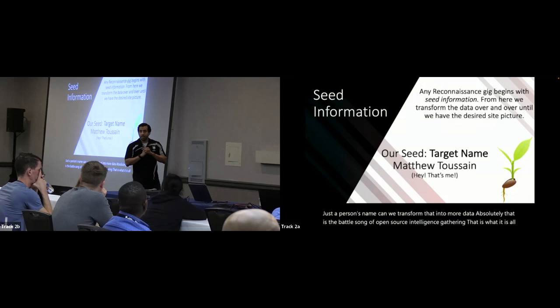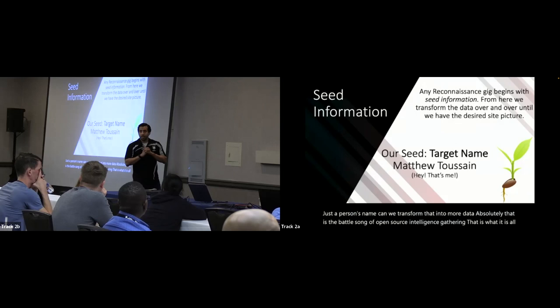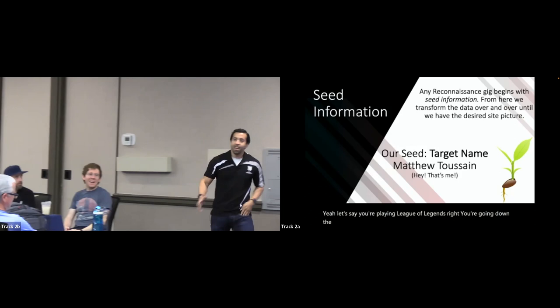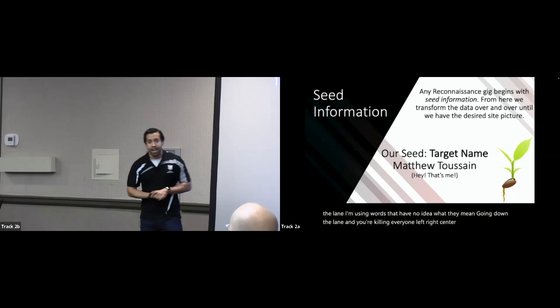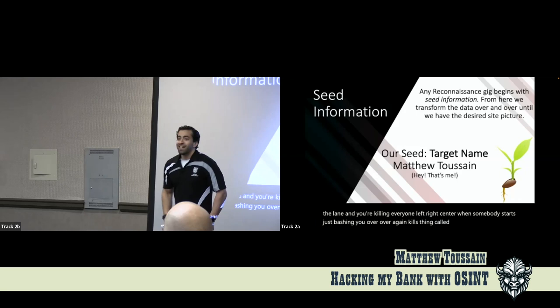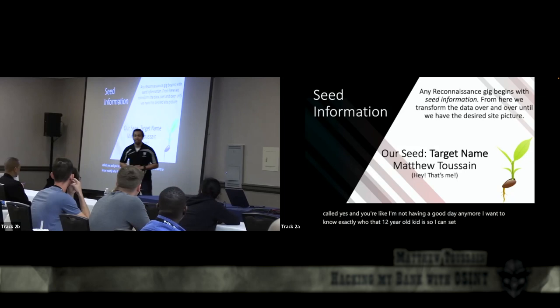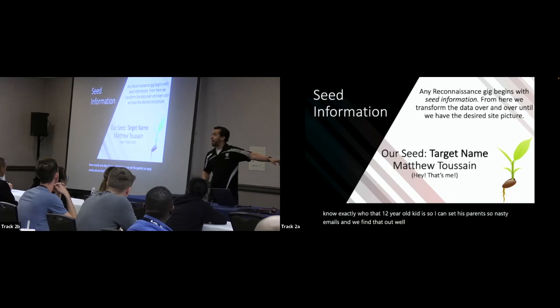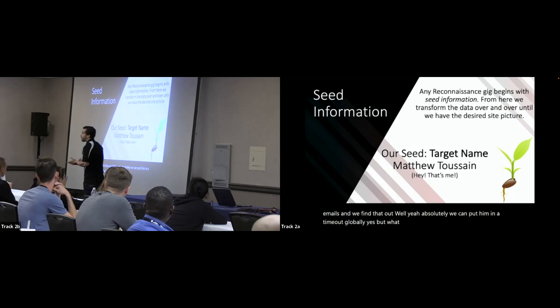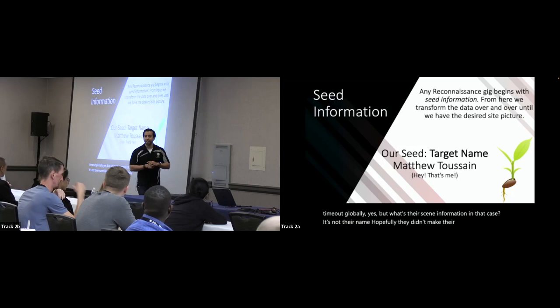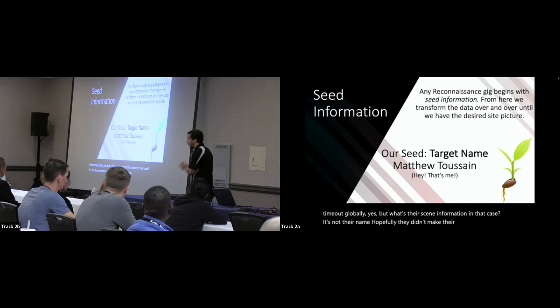Generally, if you've got a target you probably know their name. But what if you don't? For example, in online gaming, if someone is griefing you, your seed information might be a username — a UID. Can we transform a UID? Yes. We can transform IPv4 addresses, names, UIDs — the question is what transformation we perform and where we look it up. The easiest way to start is Google, and in almost all cases it does work.